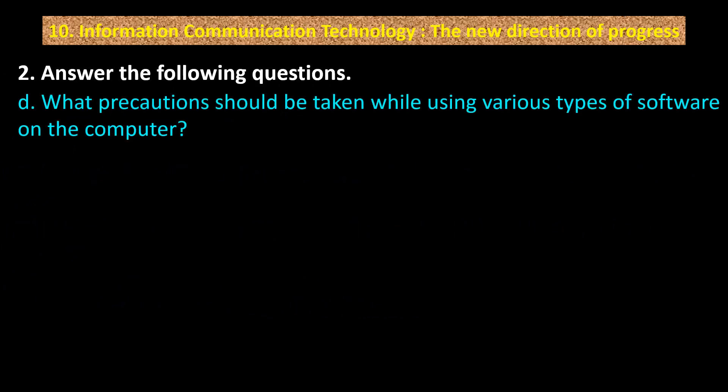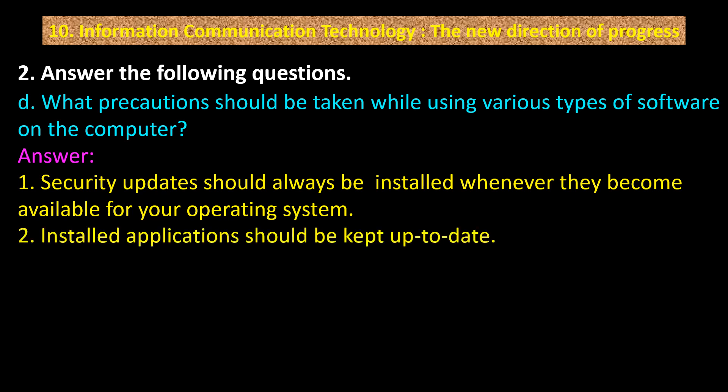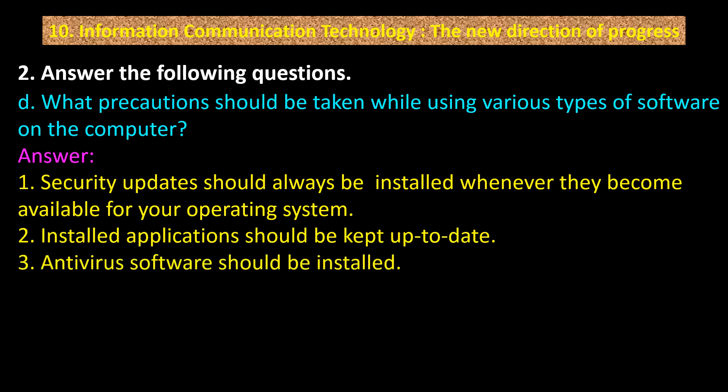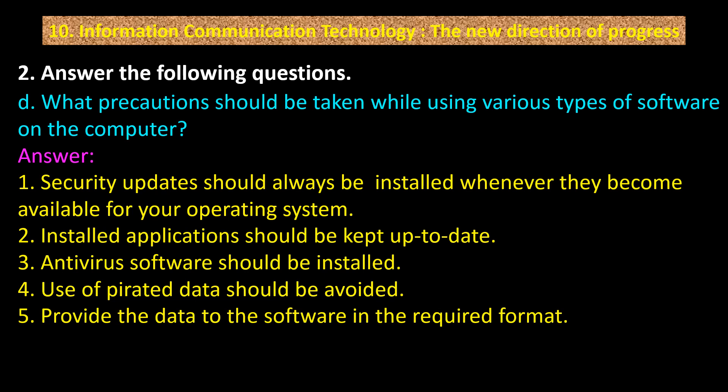Part D: What precautions should be taken while using various types of software on the computer? Answer: Point 1 — security updates should always be installed whenever they become available for your operating system. Point 2 — installed applications should be kept up to date. Point 3 — antivirus software should be installed. Point 4 — use of pirated software should be avoided. Point 5 — provide data to the software in the required format.